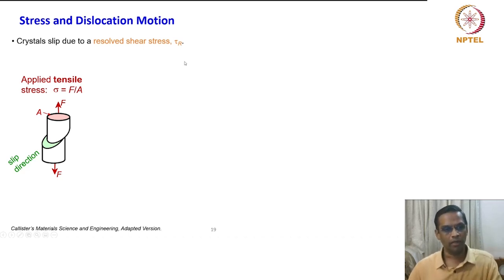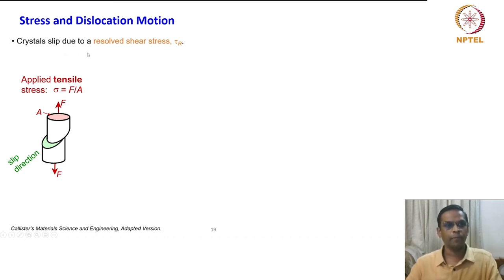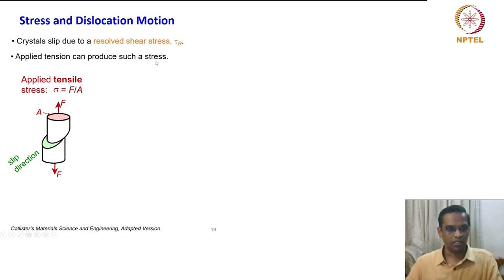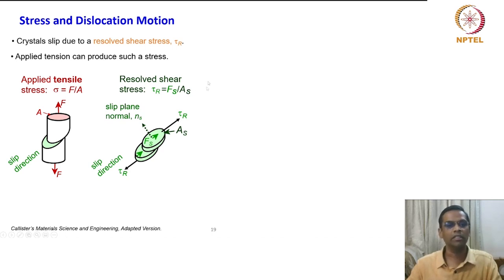We already know that a total stress or normal stress can be resolved into shear stress and normal stress. Slip is caused by the resolved shear stress component of the applied stress. Applied tension can produce such a stress, and the resolved shear stress tau_r equals the shear force divided by the area where the shear force is acting.